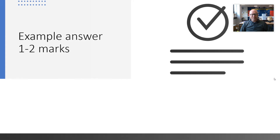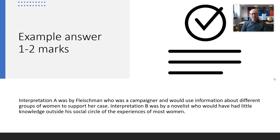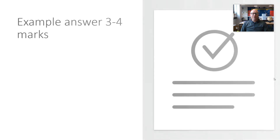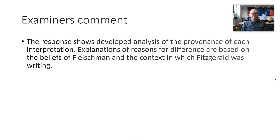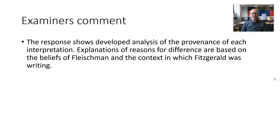A basic two-mark answer: 'Interpretation A was by Fleischman, who was a campaigner, who would use information about different groups of women to support a case. Interpretation B was by a novelist who would have had little knowledge outside of his social circle.' For top marks: 'Fleischman was a campaigner for women's rights, so it focuses on women who were trapped by poverty and tradition, who did not enjoy the freedoms offered by the economic boom. Fitzgerald, by contrast, was writing about the women he knew. He was wealthy and his wife was a flapper, so he was writing about the lifestyle him and his wife experienced. As a novelist who wrote about the fun life of wealthy women in the cities, he probably knew nothing about the lives of ordinary women that Fleischman was interested in.' The examiner notes this shows developed analysis of the provenance of each interpretation, with explanations based on the beliefs of Fleischman and the context in which Fitzgerald was writing.